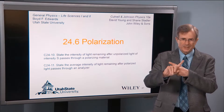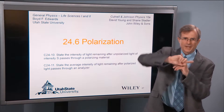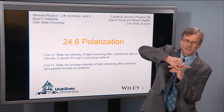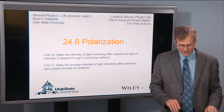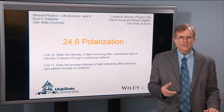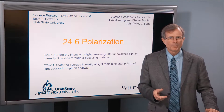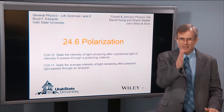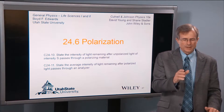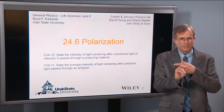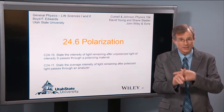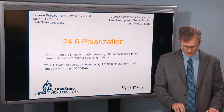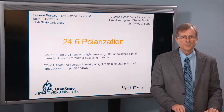So some of it will be E, B this way, some of it will be E, B this way, etc. And polarization is the process whereby we can isolate the electric field in a particular direction, which will isolate also the direction of the magnetic field.